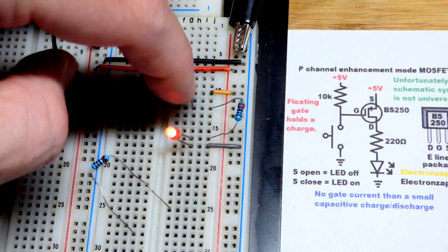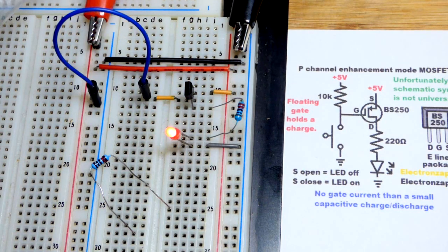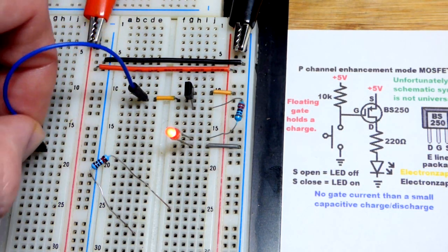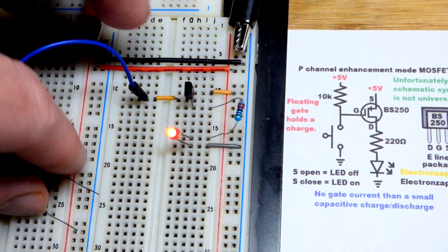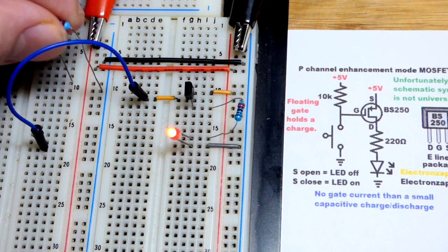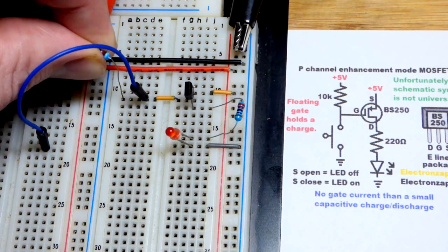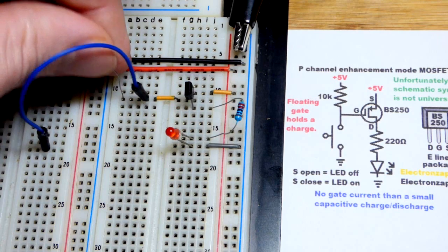So the MOSFETs work great as switches. And this is how the P-channel MOSFET switch works. And there you can see that technically this should be off, since it's an enhancement mode MOSFET. But it was holding that voltage. So we add a pull-up resistor there.